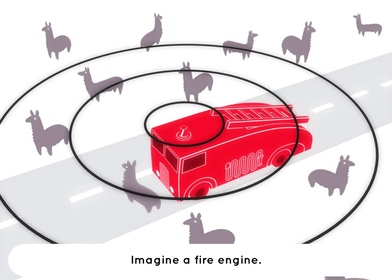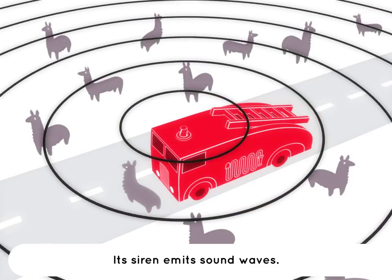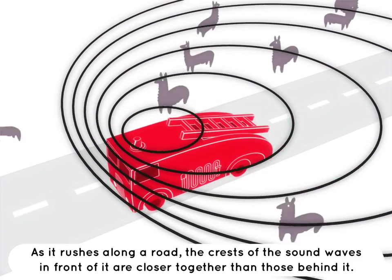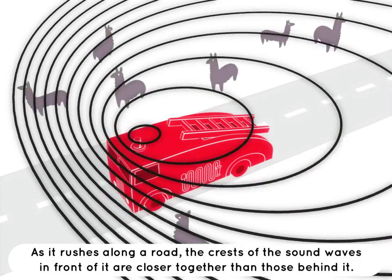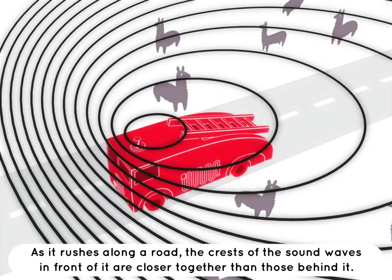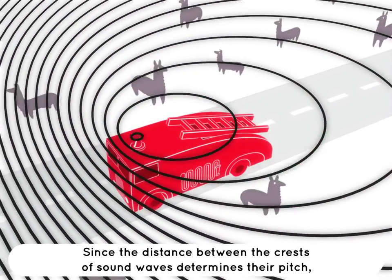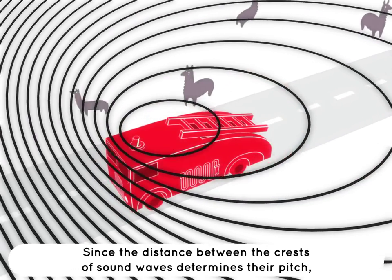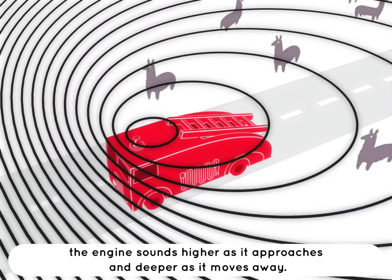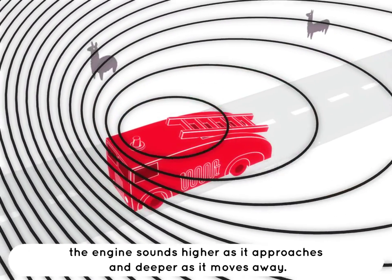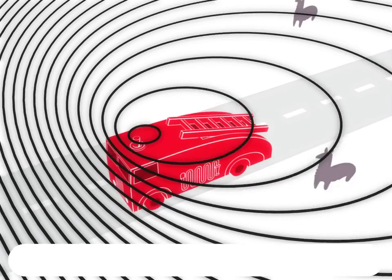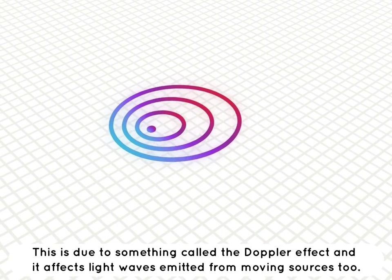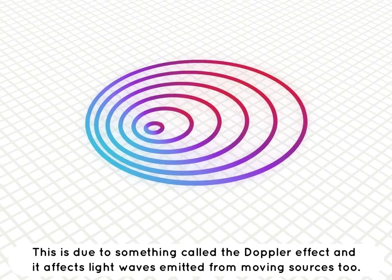Imagine a fire engine — its siren emits sound waves. As it rushes along the road, the crests of the sound waves in front of it are closer together than those behind it. Since the distance between the crests of sound waves determines pitch, the engine sounds higher as it approaches and deeper as it moves away. This is due to something called the Doppler effect, and it affects light waves emitted from moving sources too.